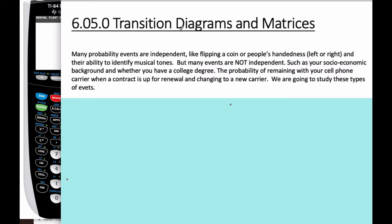There are lots of events where probabilities are not independent, such as socioeconomic background and whether you have a college degree — there's a big relationship between those two. Another example: the probability of remaining with your cell phone carrier when your contract is up for renewal. Chances are you're going to stick with your carrier rather than change, so each time your contract comes up, the probability of changing is very low because it depends upon your carrier. We're going to study scenarios where the probability of an event depends upon the previous event — this whole process is called Markov chains.